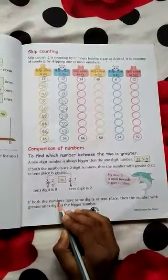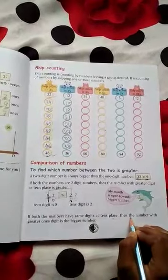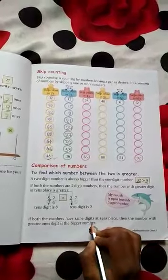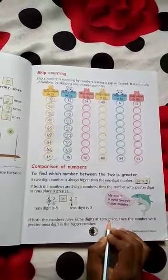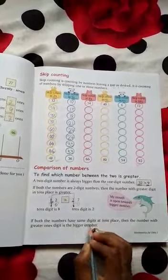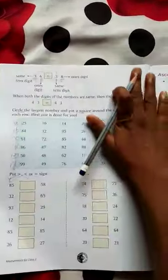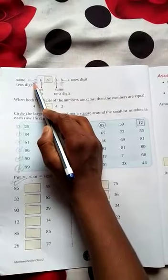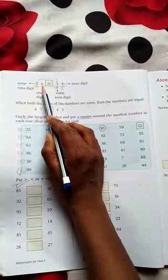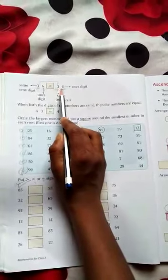If both the numbers have same digits at tenth place, then the number with greater ones digit is the bigger number. We have to know the ones digit, which is 6 or 8. So what is greater than?